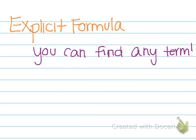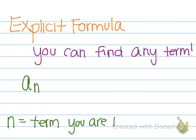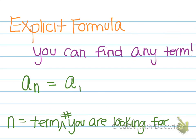So to find any term, a sub n represents the term value of what you are looking for, and n is the term number you are looking for. Then we have a sub 1, meaning the first term. So if we are looking for the 100th term, you would say a sub 100. The formula is: a sub 1, plus d — which is our common difference — times n minus 1, where n is the term number you are looking for.